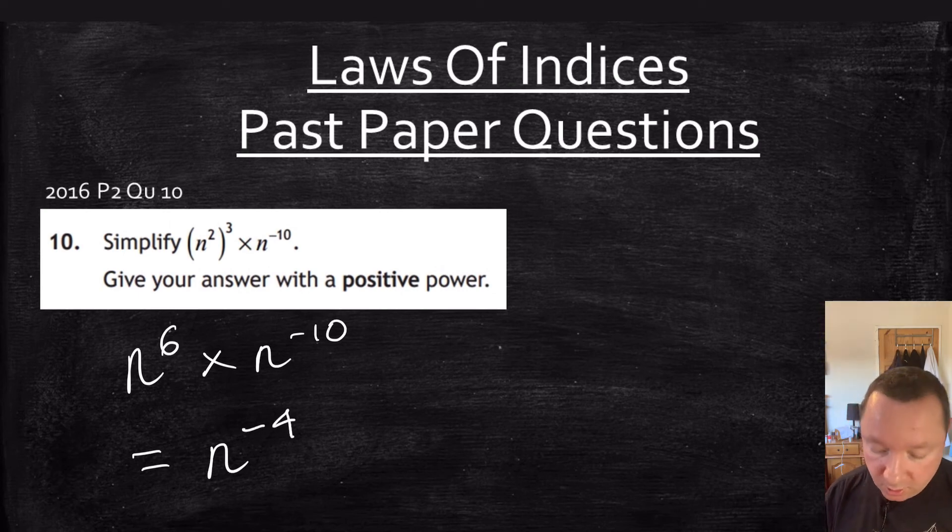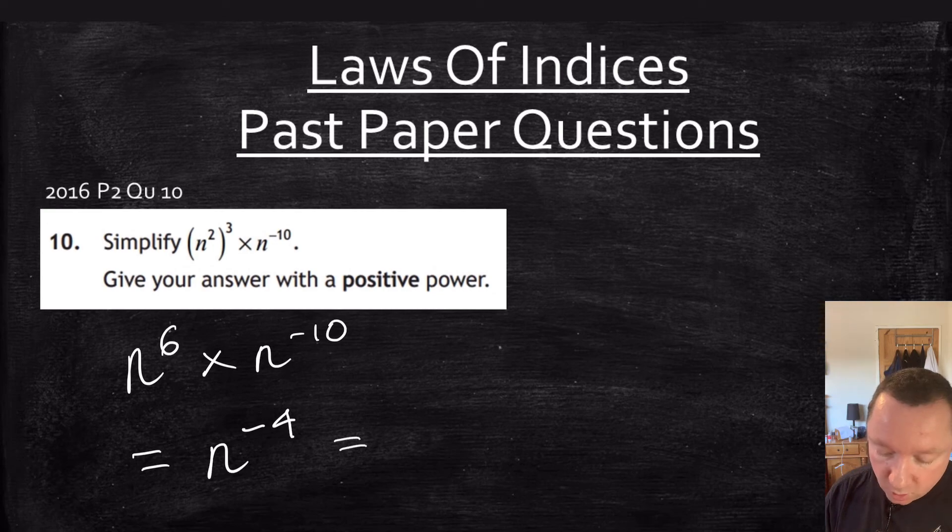Leave your answer as a positive power, the last little thing then: 1 over n to the 4. And we're done.